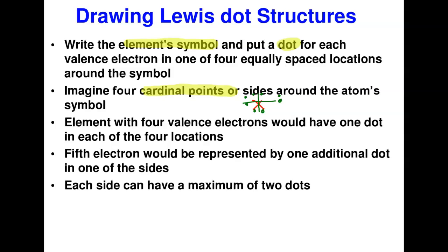We imagine four sides around the atom and begin placing dots. An element with four valence electrons gets one dot on each of the four sides. When you have a fifth electron, you go back to a side and add a second dot. Each side can hold a maximum of two dots.